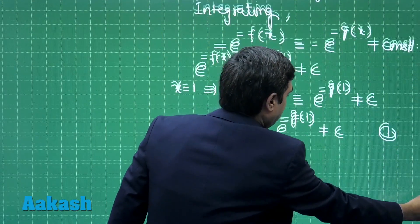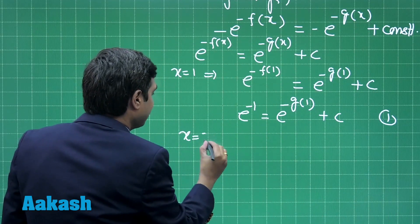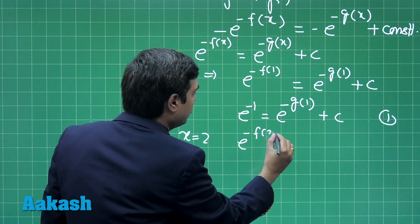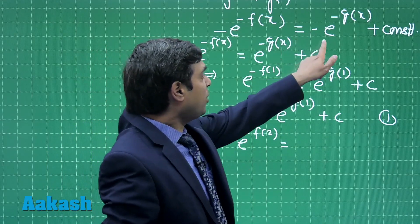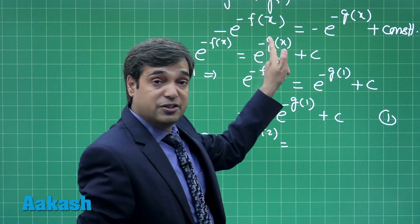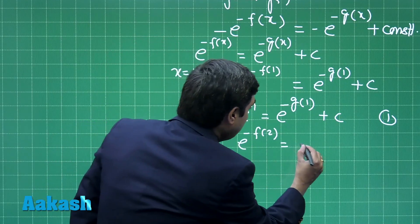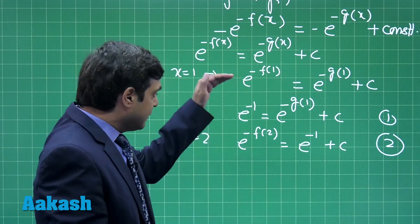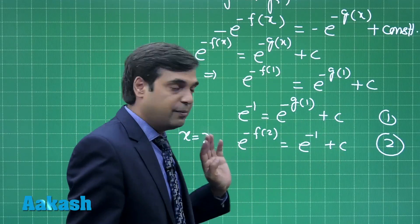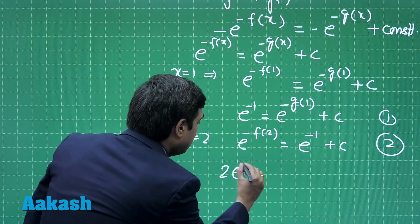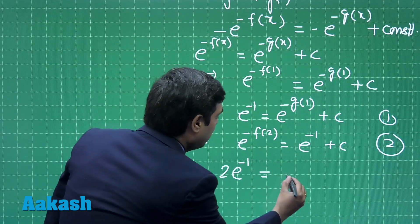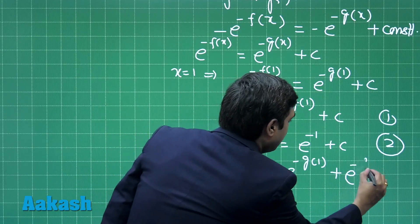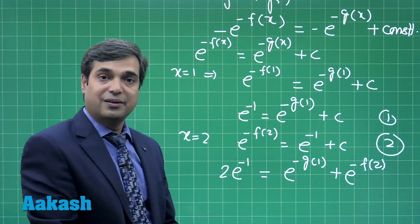Moving ahead, when we substitute x equal to 2, we get e to the power minus f(2) is equal to e to the power minus g(2) plus constant. Since g(2) equals 1, this gives e to the power minus f(2) in terms of the constant.